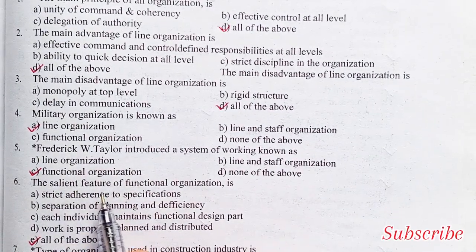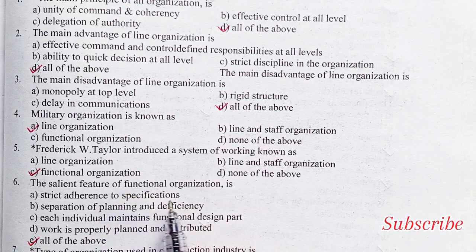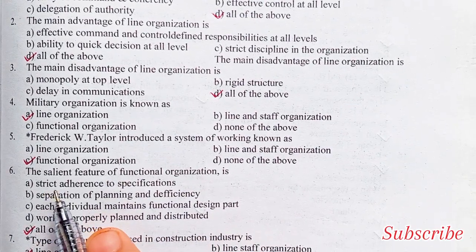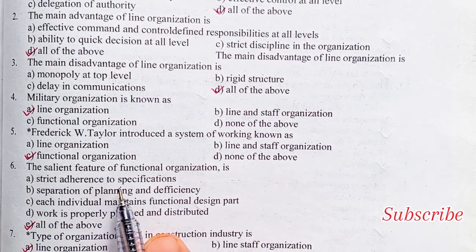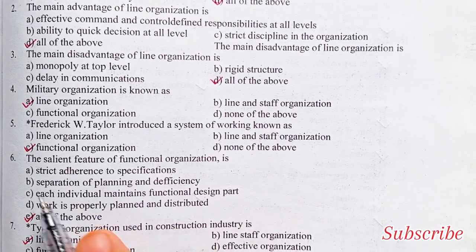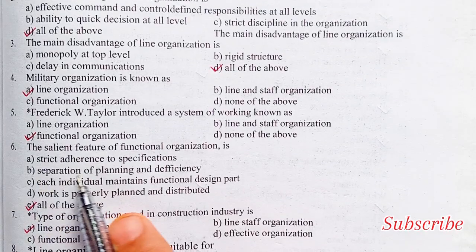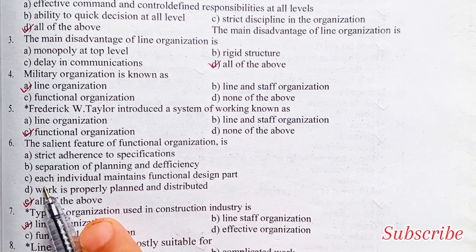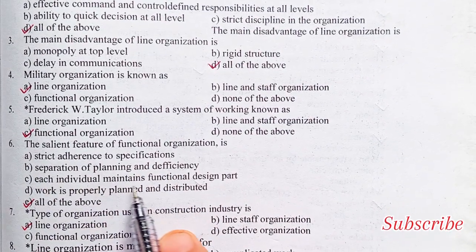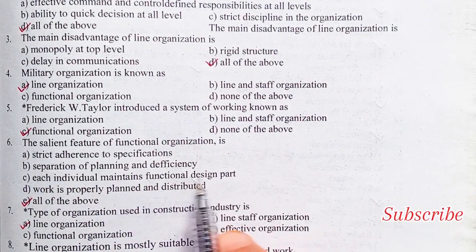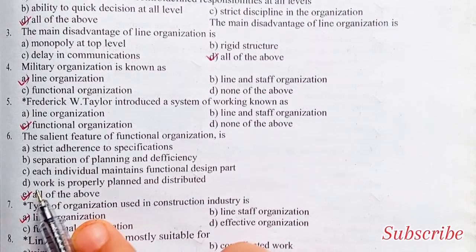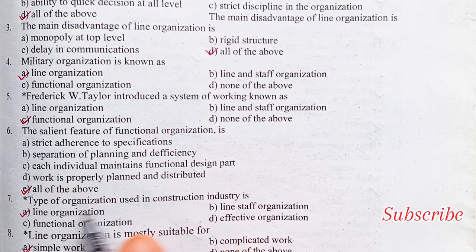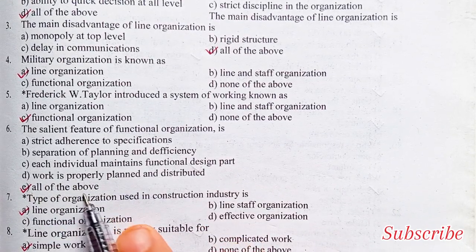The salient feature of functional organization: strict adherence to specifications, separation of planning and efficiency, each individual maintains their functional design part, work is properly planned and distributed — all of the above.